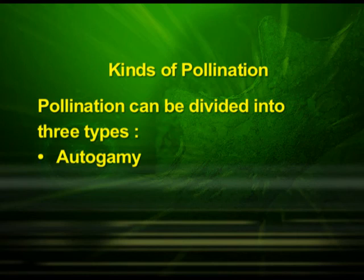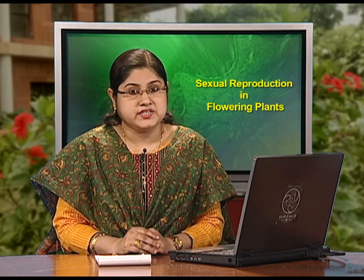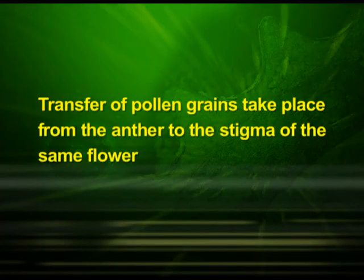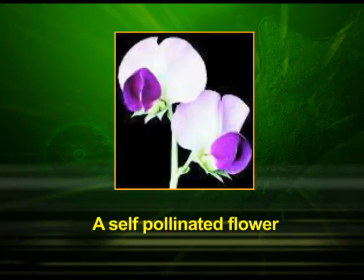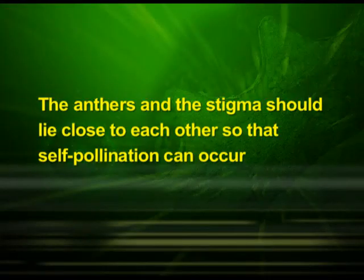The first type is autogamy. In this type, pollination is achieved within the same flower — transfer of pollen grains takes place from the anther to the stigma of the same flower. In a normal flower which opens and exposes the anthers and the stigma, complete autogamy is rare. Autogamy in such flowers requires synchrony in pollen release and stigma receptivity, and the anthers and stigma should lie close to each other. Some plants such as Viola or common pansy, Oxalis, and Camelina produce two types of flowers.